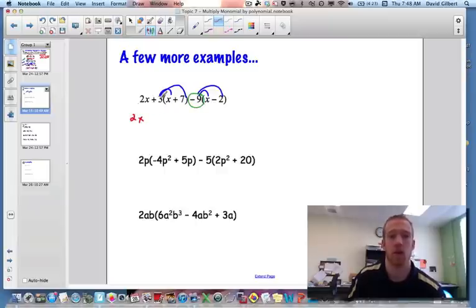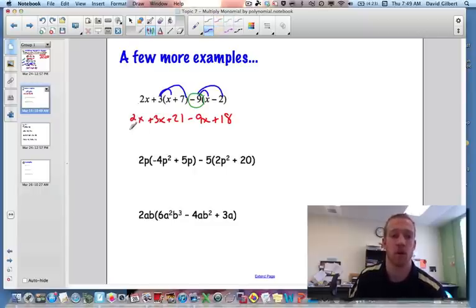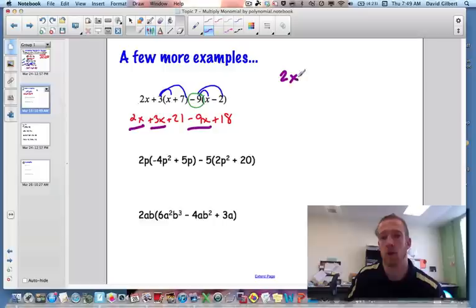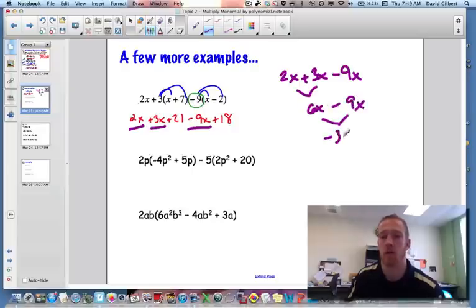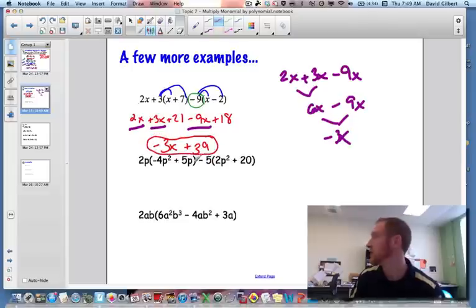So I rewrite the 2x. 3 times x is positive 3x, 3 times 7 is positive 21. Negative 9 times x is negative 9x, negative times a negative is a positive 18. Now we're not done because we need to combine like terms. So we have a 2x, a 3x, and a negative 9x. That's like 6x minus 9x, which is negative 3x. And then 21 plus 18 is a positive 39. There's our final answer.